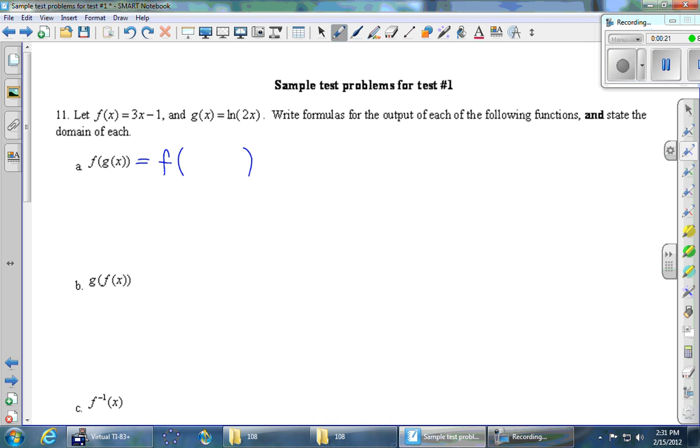So when we're composing functions, we work inside to outside. g of x in this case is ln of 2x. And now we're doing f applied to that. f is a formula that takes 3 times the input and subtracts 1. That's the 3x minus 1. The input in this case isn't x, though. It's ln of 2x. So getting rid of those parentheses, we just get 3 ln of 2x minus 1.